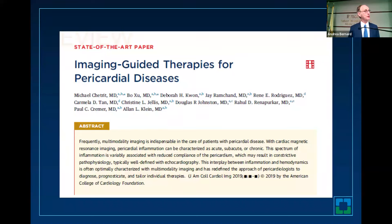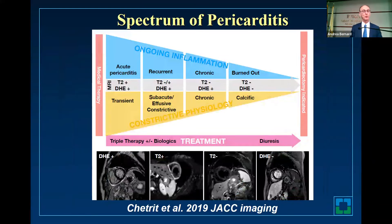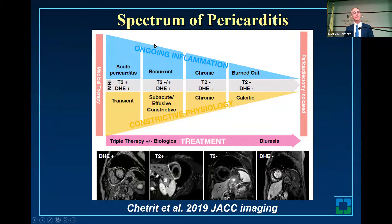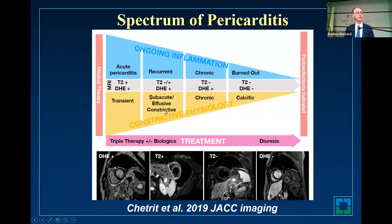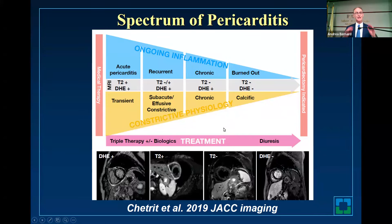We also got into how imaging helps with pericardial diseases. If someone at Robert Wood Johnson Hospital has pericarditis, we ask where they are on the spectrum. Is there ongoing inflammation or constrictive physiology? Do you have acute pericarditis, recurrent, chronic, or burnt out? For the constriction part, is it transient, subacute, chronic, or calcific? What does the advanced imaging show? MRI will show edema and delayed enhancement early on, and that will gradually disappear over time. Based on that, you decide the type of therapy — triple therapy, biologics, or surgery.